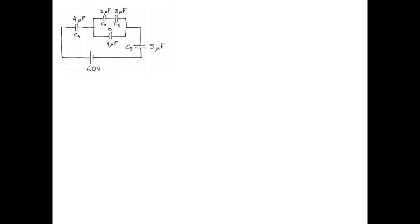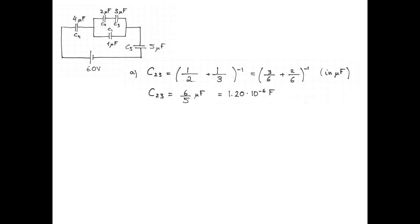Capacitor 2 and capacitor 3 — the 2 microfarad and 3 microfarad — are in series. Capacitors in series add like resistors in parallel, so we add their inverses and take the inverse of that. In microfarads: 1 over 2 plus 1 over 3, which is 3 sixths plus 2 sixths. Taking the inverse gives an equivalent capacitance of 6 fifths microfarads, or 1.2 microfarads.